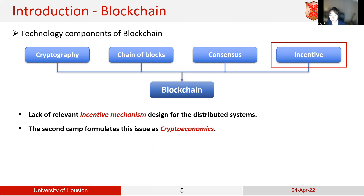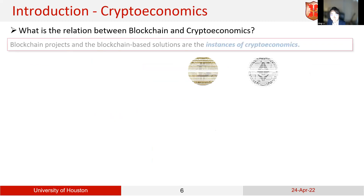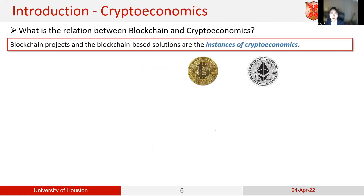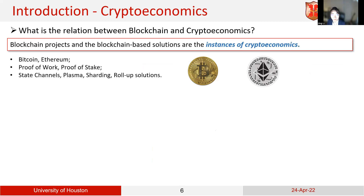What are the differences between crypto economics and the blockchain network? All blockchain projects and blockchain-based solutions are considered instances of crypto economics. Popular ones include Bitcoin, Ethereum, and consensus mechanisms such as proof of work, proof of stake, and proof of authority. For layer two, all scalability solutions such as the state channel, plasma, sharding, and rollup solutions are also considered instances of crypto economics.